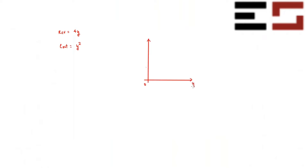I'm going to draw marginal revenue and show how you can go from marginal revenue to total revenue. The vertical axis shows marginal revenue and marginal cost, and the horizontal axis shows output. The marginal revenue is the derivative of revenue with respect to y, which is four.